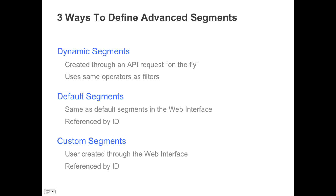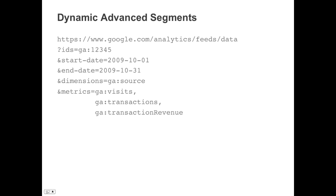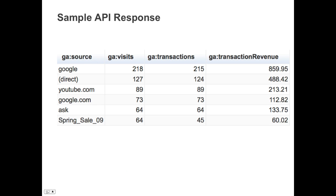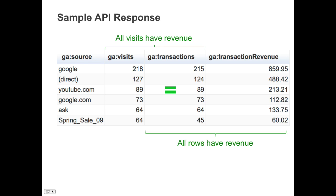Let's go through each of these and see how they work with our original query. In the query, all three types of segments can be defined through a new segment parameter. We add the word 'dynamic' followed by two colons to signify we want to define a new dynamic segment. Next, we add the segment expression — in this case, where transaction revenue is greater than zero. Notice all results have revenue, similar to when we applied a filter. But now the number of visits is very similar to the number of transactions, because all returned visits have greater than zero dollars in revenue.